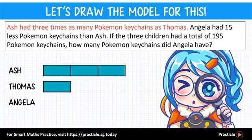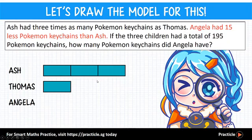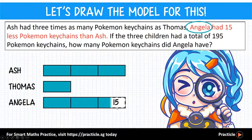Now let's move on to the next sentence: Angela had 15 less Pokemon keychains than Ash. Since we are comparing Angela to Ash, let's look at how many units Ash has — three. That's why we will draw three units to represent Angela's keychains, and subtract the part that represents 15. Since the 15 isn't really there, we are going to draw it with dotted lines to remind us.